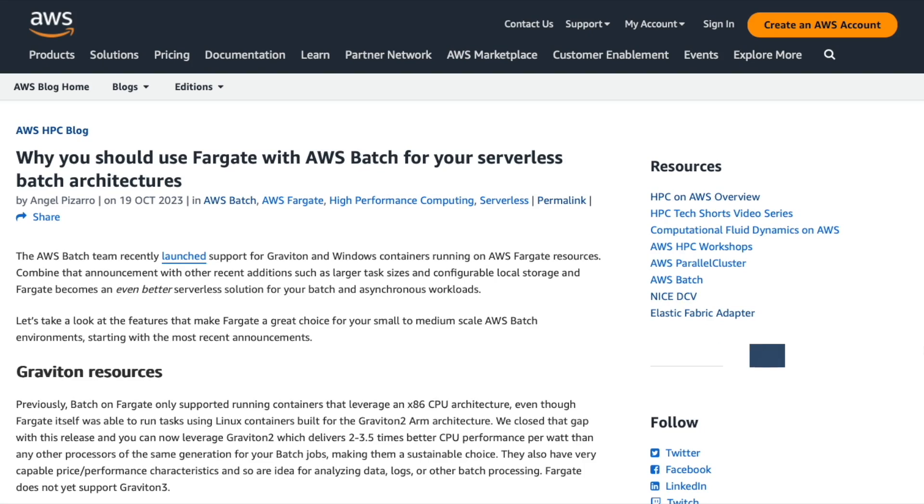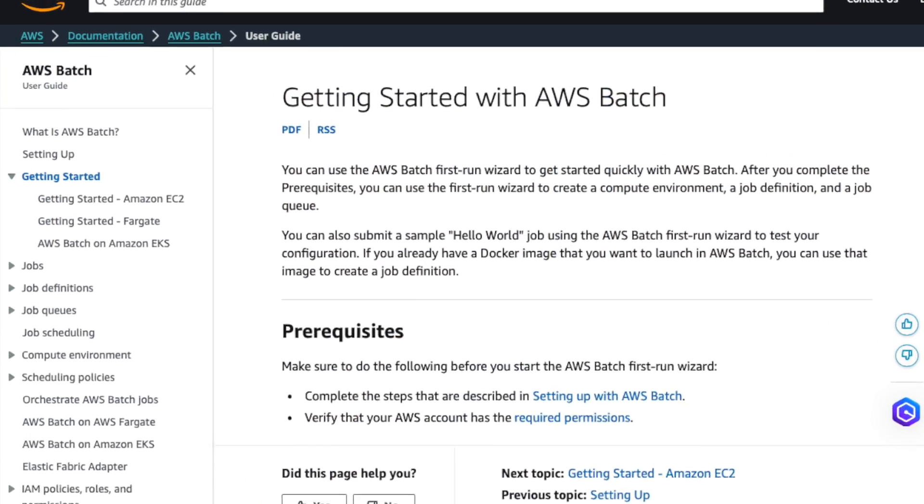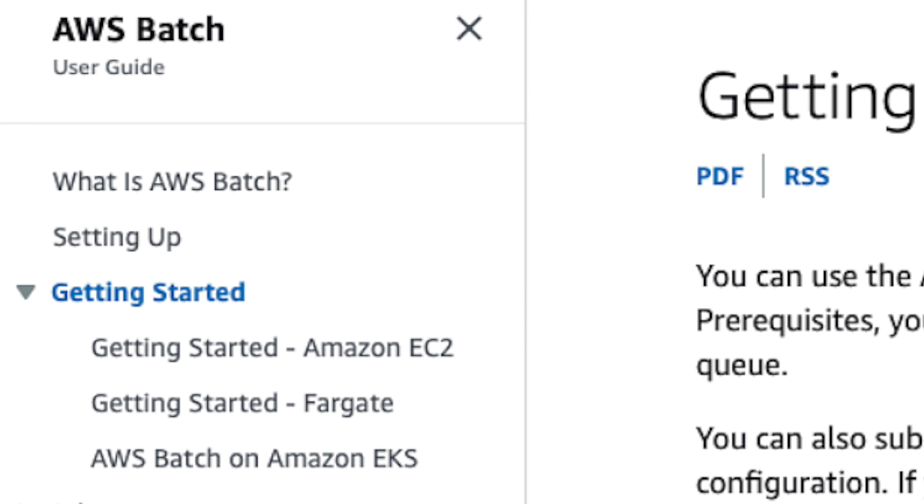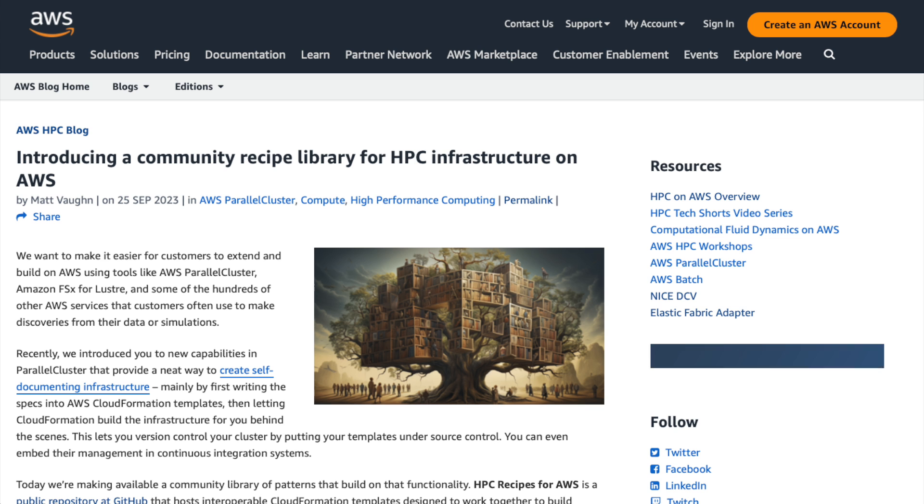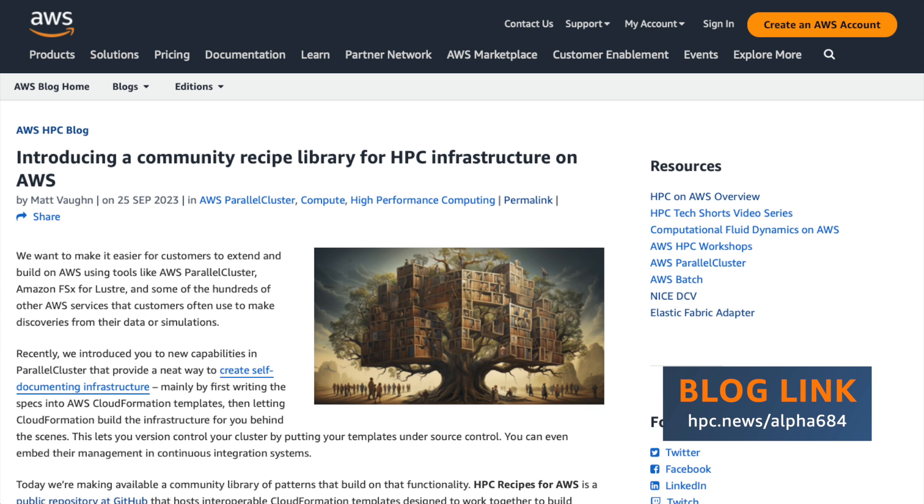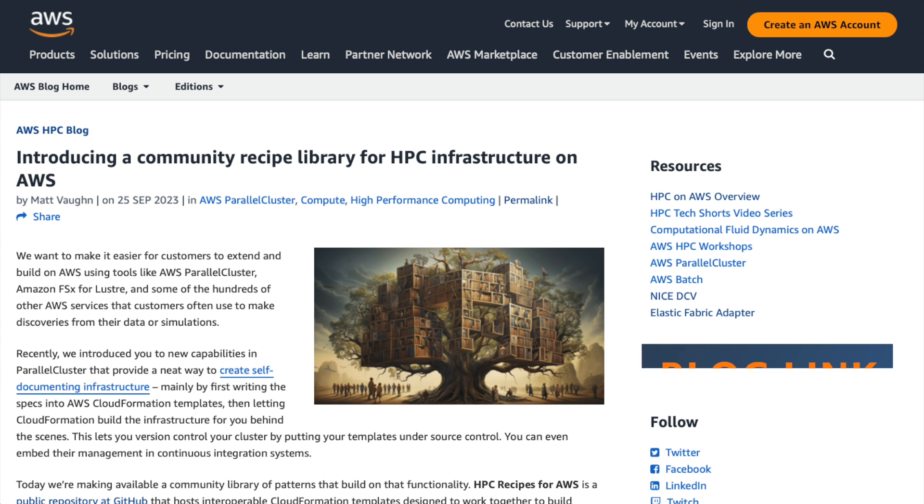The best way to get started is to read the blog post. You can also use the getting started guide in AWS Batch documentation, which uses Fargate as the example. Finally, HPC recipes, which we covered in a tech short a few weeks ago, is adding a Fargate environment, so you'll have a one-click install through CloudFormation very shortly.